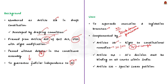Then, Article 141 says that the Supreme Court's decision shall be binding on all courts within India. Article 142 is an extraordinary power of the Supreme Court to enforce its orders or decrees, and when Article 141 comes in, it is an add-on to the Supreme Court to ensure enforcement.